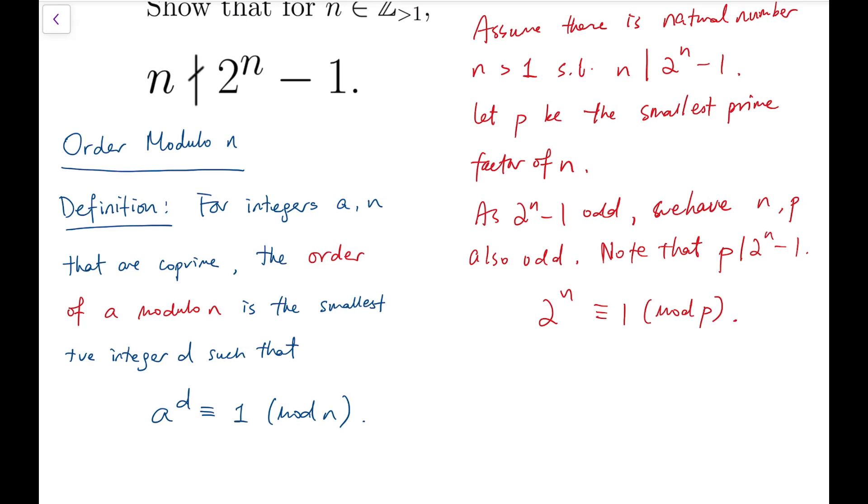Now, since p is odd, it's obviously co-prime with 2. So we consider the smallest positive integer d such that 2 to the power d is congruent to 1 mod p, which means actually we're saying the order of 2 mod p.